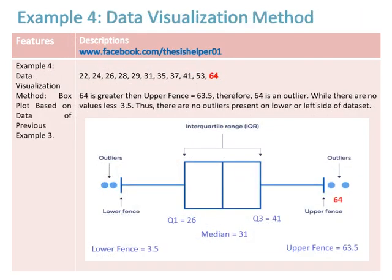Example four is the data visualization method using a box plot, based on the data from example three. The lower fence equals 3.5, Q1 equals 26, the median equals 31, Q3 equals 41, and the upper fence equals 63.5. Since 64 is greater than the upper fence of 63.5, it is an outlier. There are no values less than 3.5, so there are no outliers on the lower side of the data set.